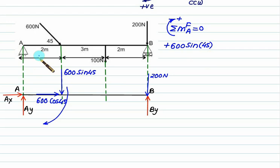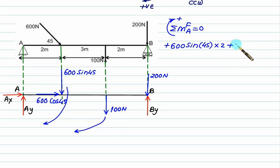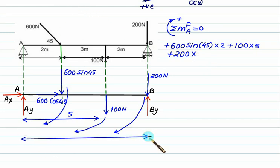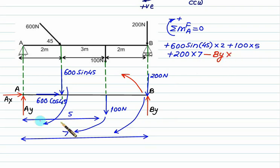600 sin 45 makes a clockwise moment about A — clockwise is positive — force is 600 sin 45 and perpendicular distance is 2 m. The 100 N force also rotates clockwise about A, so positive: force 100 N, perpendicular distance is 2 + 3 = 5 m. The 200 N force also makes a clockwise moment, positive: force 200 N, distance from A to B is 2 + 3 + 3 = 7 m. By makes an anti-clockwise moment, so negative sign: −By × 7. Solving this equation gives By = 392.6 N.